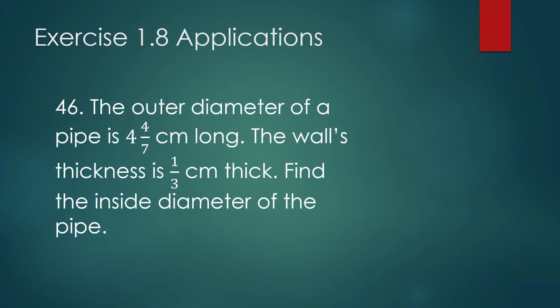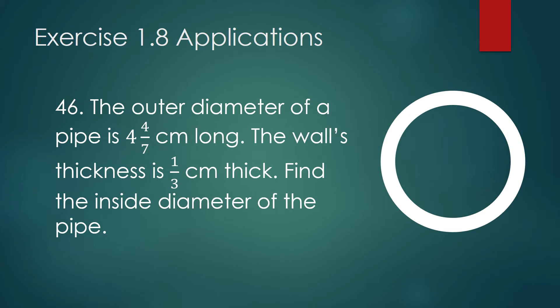Exercise 2: The outer diameter of a pipe is 4 and 4 over 7 centimeters. The wall's thickness is one-third centimeter thick. Find the inside diameter of the pipe. Let's say this is the cross section of the pipe — we are looking into the pipe. The diameter is the line segment that intersects the circle, passing through its center, and it is 4 and 4 over 7 centimeters long. The thickness of the pipe wall is one-third centimeter.